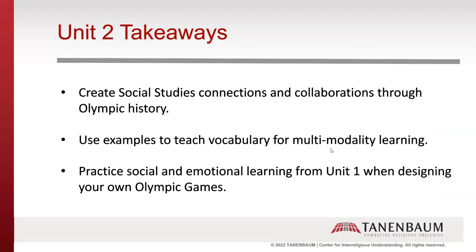And with that, we come to the end of our activities for today. The lessons we covered today make excellent additions to social studies content on ancient and modern history as well as on current events like drug and doping scandals in sports. When you draw these connections, be sure to highlight the issues of justice and fairness that arise when considering the history of the Olympic Games. Students will not only be able to practice critical thinking skills that connect the Olympics to social justice issues, but will also have an opportunity to consider how to address these issues in their own Olympic Games.